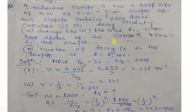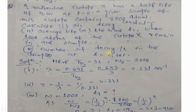Now let us solve a problem using the formulas for half-life, decay constant, and average life. A radioactive isotope X has a half-life of 3 seconds. At T = 0, a given sample contains 8,000 atoms. Calculate: (a) its decay constant, (b) average life, (c) the time T₁ when 1,000 atoms remain in the sample, and (d) the number of decays per second at T = T₁.